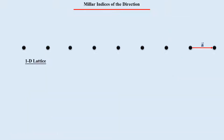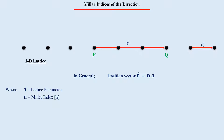Let's talk about Miller indices of the direction of a lattice point. Consider a one-dimensional lattice with lattice parameter A, meaning the distance between two consecutive lattice points is A. To indicate the direction of any lattice point Q from lattice point P, we draw a position vector from P to Q, which equals N times the lattice vector A. The position vector R1 from P to Q equals 3A, so the Miller index of this direction is 3, written in square brackets as [3].